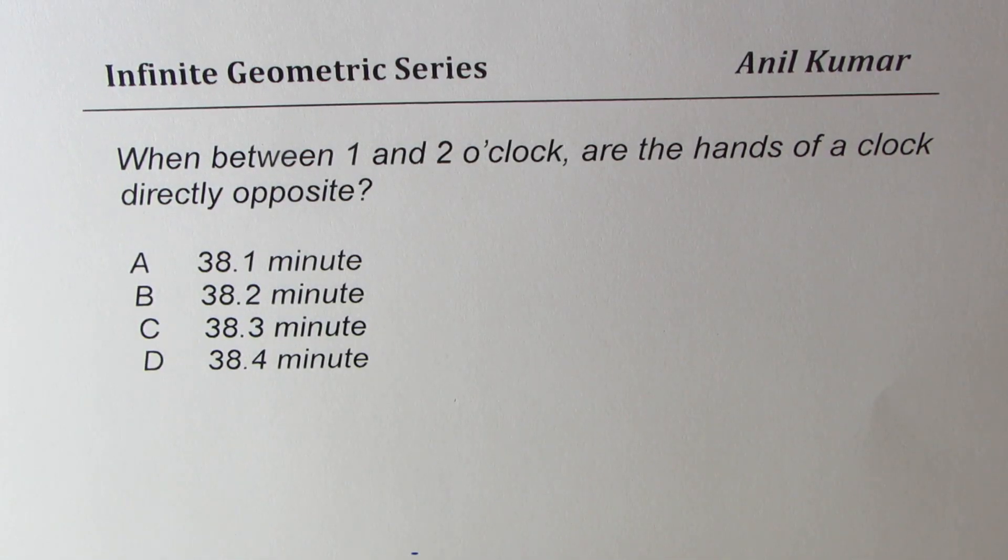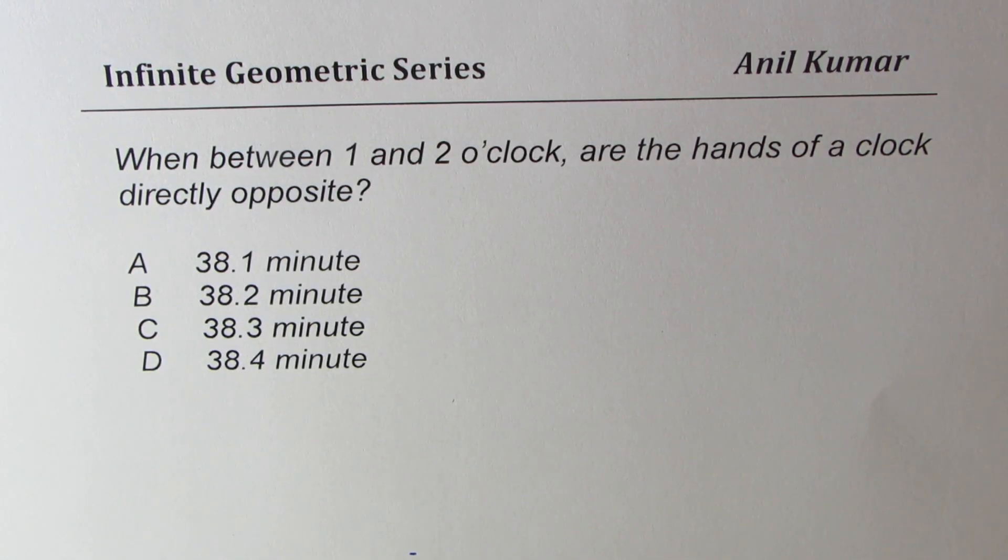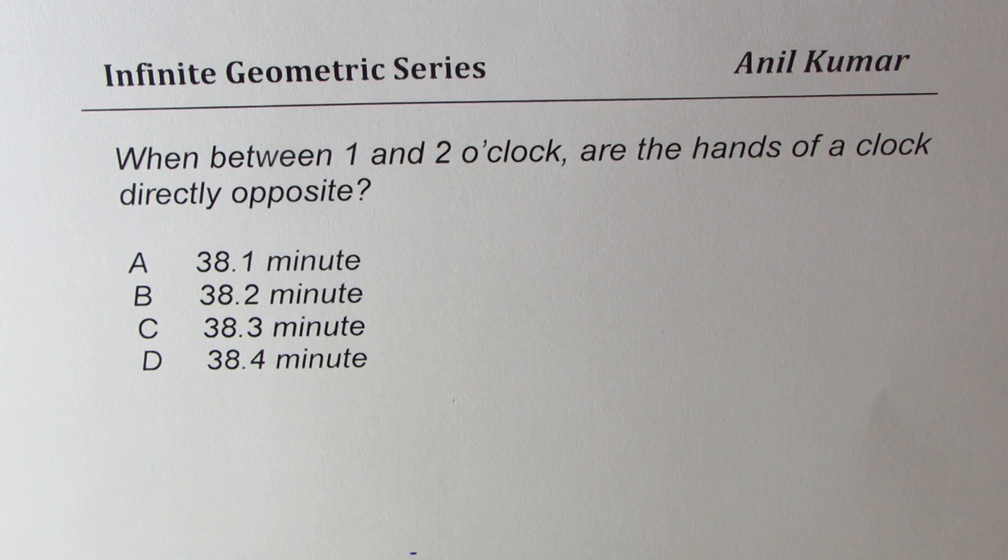I'm Anil Kumar sharing with you a very popular multiple choice question based on the position of arms of the clock. When between 1 and 2 o'clock are the hands of a clock directly opposite? Four choices are given to you.